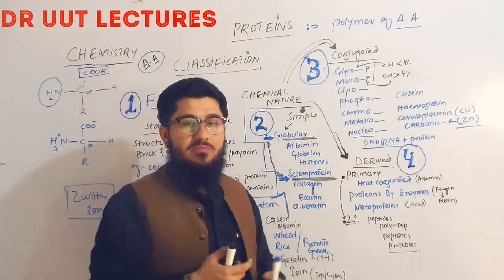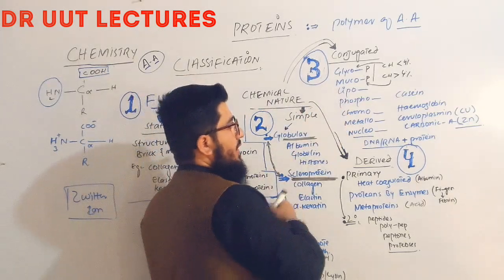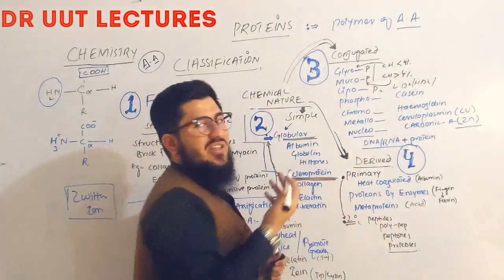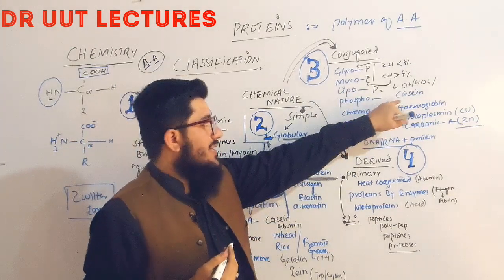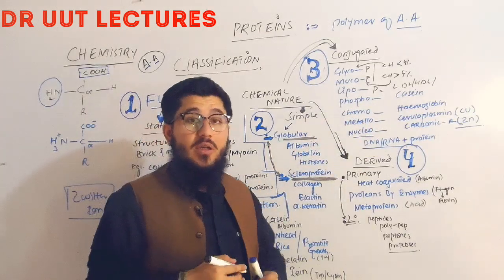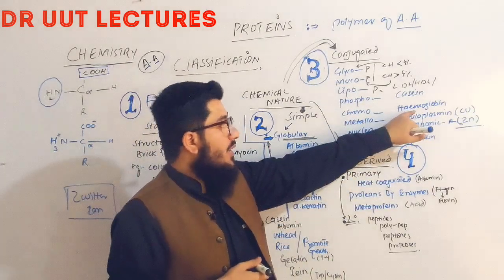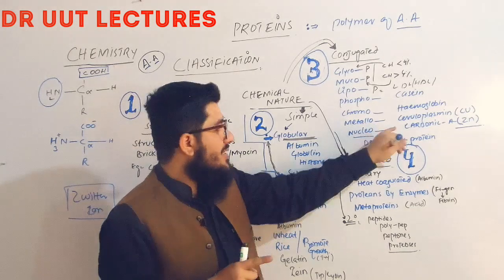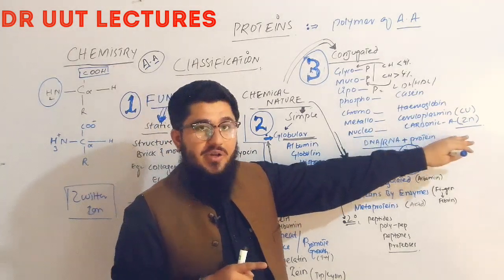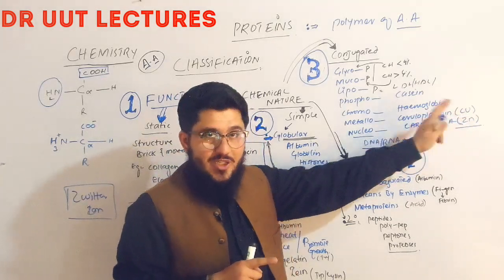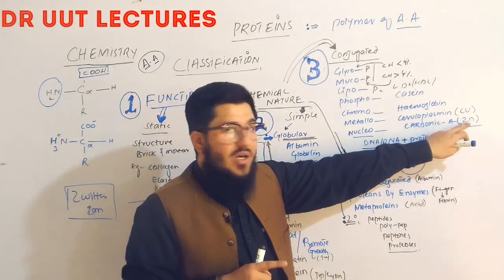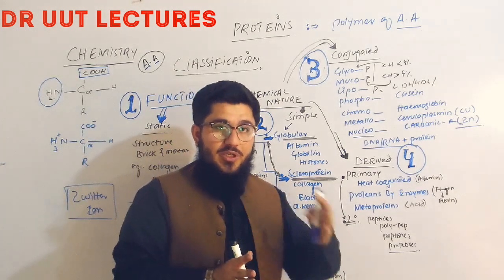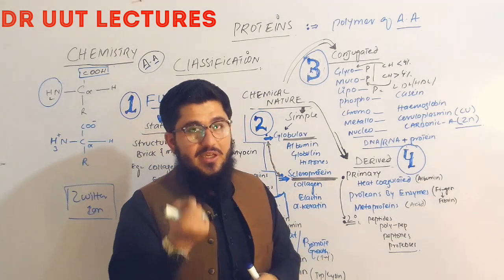Further conjugated proteins include: lipoprotein — when lipid is attached to a protein (examples: LDL, HDL, VLDL, IDL); phosphoprotein — when phosphate is attached to a protein (example: casein); chromoprotein — when a colored substance is attached (example: hemoglobin); metalloprotein — when a metal is attached (examples: ceruloplasmin, which contains copper, and carbonic anhydrase, which contains zinc); and nucleoprotein — when DNA or RNA is attached to a protein (example: histones attached to DNA).